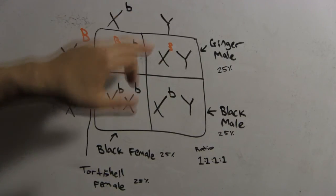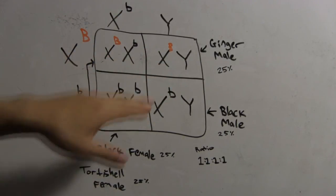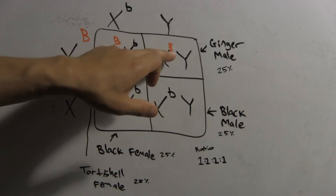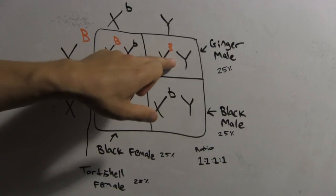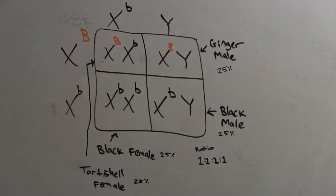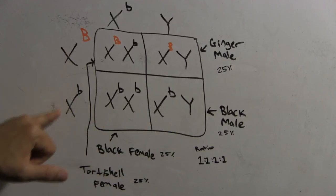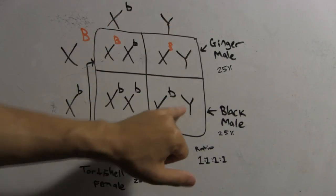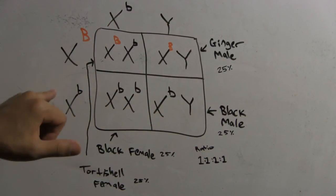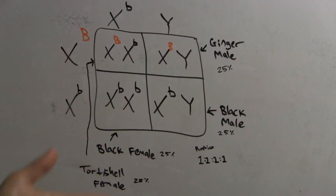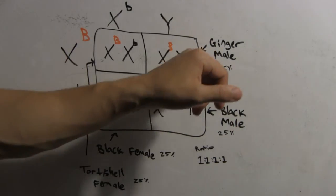You go here. You take this X uppercase B and this Y, put them in here, this box. You have X uppercase B is ginger. Y doesn't care. It's just, you know that it's a male, but it has nothing to do with cat color, coat color. And so it's a ginger male. You go here, take this X lowercase b, take this Y, put it here. Again, the Y has nothing to do with color. X lowercase b. What's X lowercase b? It's black. Black male, ginger male.